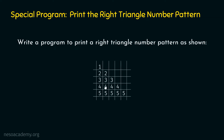There are a total of five rows and five columns needed to print this pattern. For example, a value at row number 1, column number 1; row 2, column 1; row 2, column 2; and so on up to row 5, column 5. We need a total of five rows and five columns.